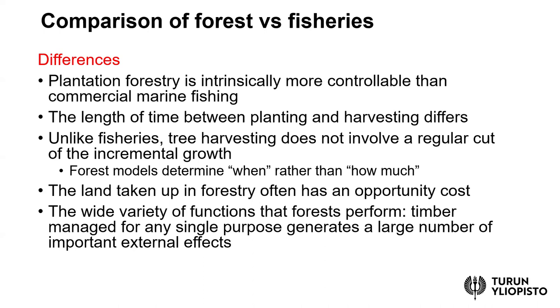Tree harvesting is done traditionally based on clear-cutting and not a regular cut of incremental growth, whereas in the case of fisheries, the idea is to keep the fish stock relatively stable and just harvest the incremental growth.